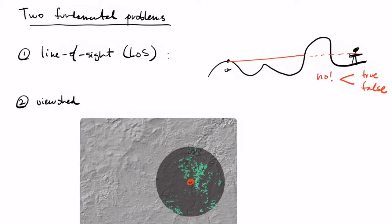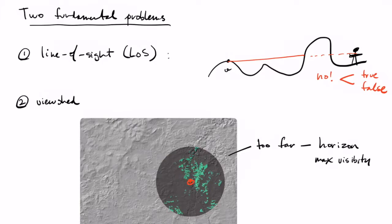The visibility polygon is usually limited to a certain horizon or maximum radius of visibility, for example 5 to 10 kilometers, since we usually can't see much further than that.